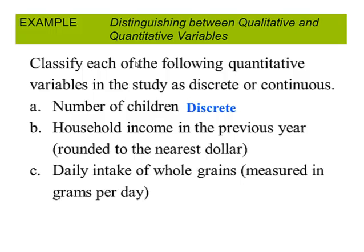Household income in the previous year rounded to the nearest dollar. This is discrete. Daily intake of whole grains measured in grams per day. This would be an example of continuous. We can measure that to whatever degree of accuracy that we want.